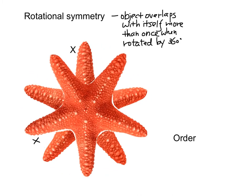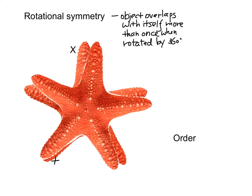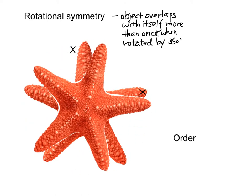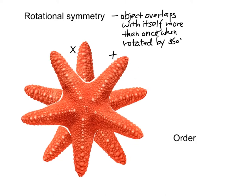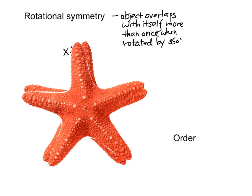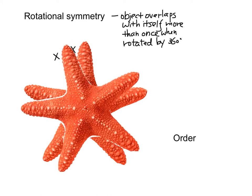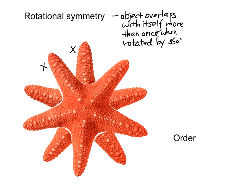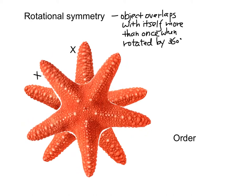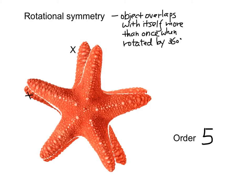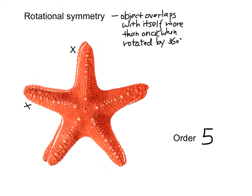So this is the first time, second time, third time, fourth time, and the fifth time — that is, when it is rotated by 360 degrees, it overlaps with itself five times. We can say that this starfish has a rotational symmetry of order five.